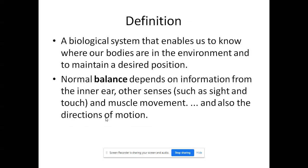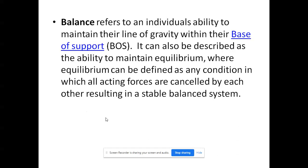Coming to the definition: balance is a biological system that enables us to know where our bodies are in the environment — in which position our body is, whether you are sitting, standing, walking, or doing something, whether it is static or dynamic. Normal balance depends on information from eyes, ears, joints, and muscles — the inner ear, senses such as sight, touch, muscle movement, and direction of motion. Balance is defined as an individual's ability to maintain the line of gravity, drawn straight from the center of gravity (COG).